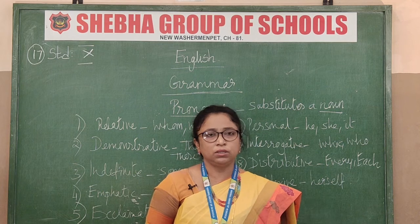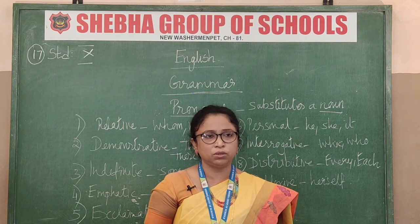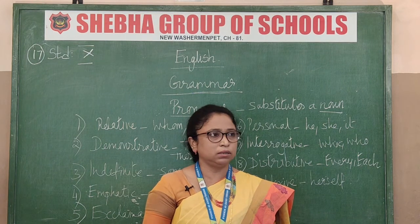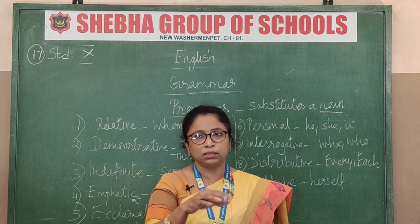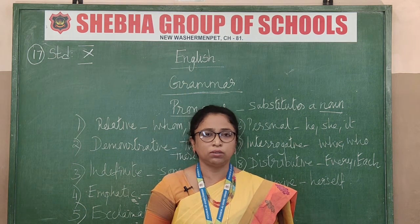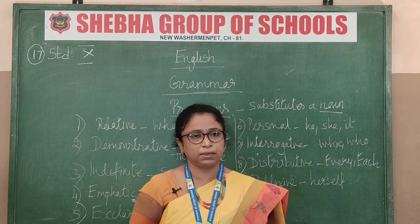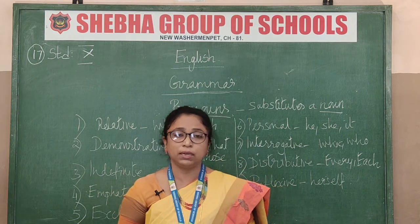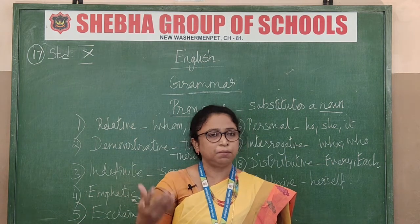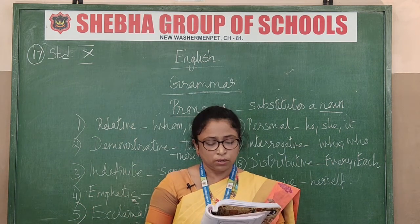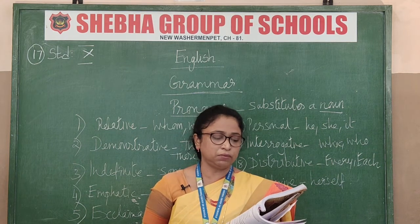Junior is abbreviated 'Jr.' — for example, if a son has the same name as his father, we say Junior. Senior is similarly abbreviated. President is abbreviated 'Pres.' And of course, CM stands for Chief Minister, PM stands for Prime Minister — these are abbreviations we use normally.